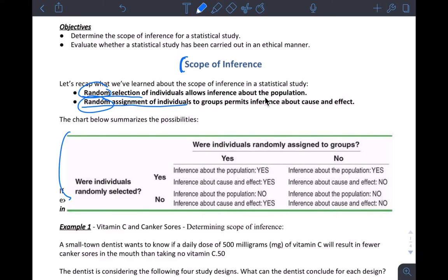So random assignment again, this would imply that you're dealing with experimentation, and then random selection usually has to do with an observational study. But in this case they're saying you can randomly select individuals and then do an experiment on them too. So that's very unusual. But what this is saying is, were students randomly selected? That's the question. And if the answer is yes, and the individuals were randomly assigned to treatment groups, then inference about the population means this...